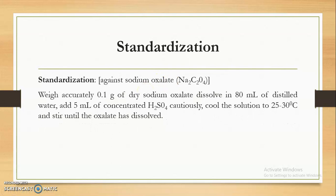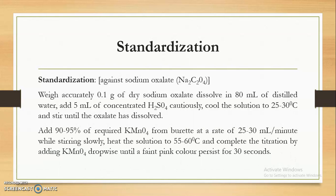The procedure: accurately weigh 0.1 gram of dry sodium oxalate, dissolve in 80 ml of distilled water, add 5 ml of concentrated sulphuric acid, cool the solution to 25–30°C and stir until the oxalate has dissolved. Then add 90–95% of the required Potassium Permanganate from the burette at a rate of about 25–30 ml per minute while stirring slowly. Heat the solution to 55–60°C and complete the titration by adding Potassium Permanganate drop-wise until a faint pink color persists for 30 seconds.